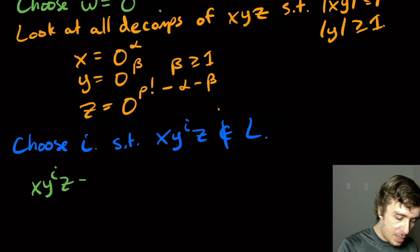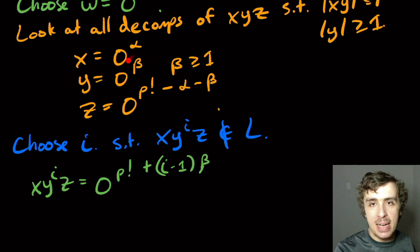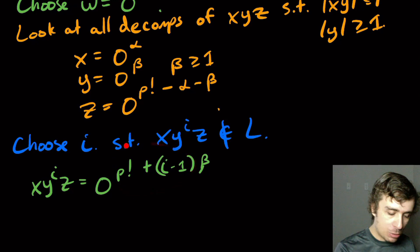which is going to be zero to the P factorial plus i minus one times beta. And the reason for that is the alphas will cancel. I'm going to get an i beta out of this and a subtract one beta out of this. So that's what we get here.